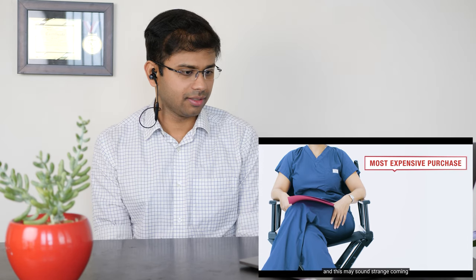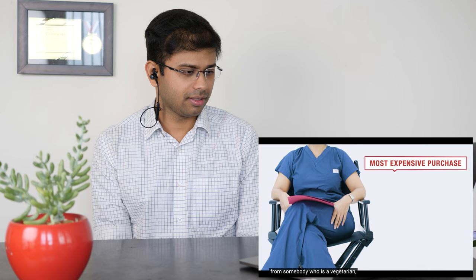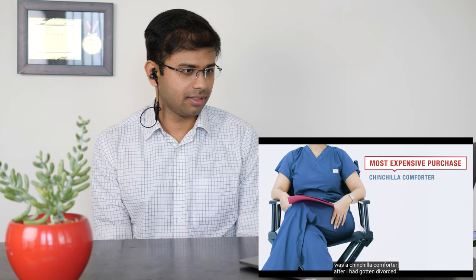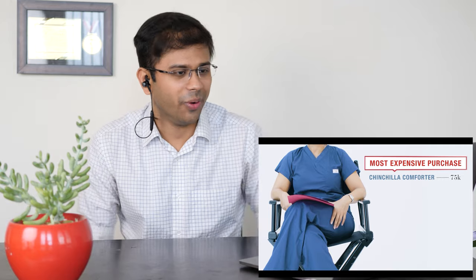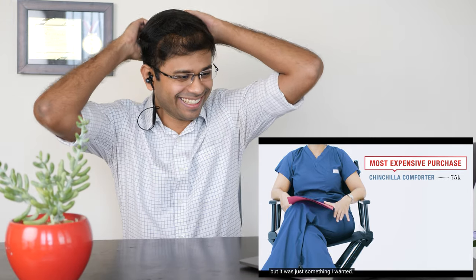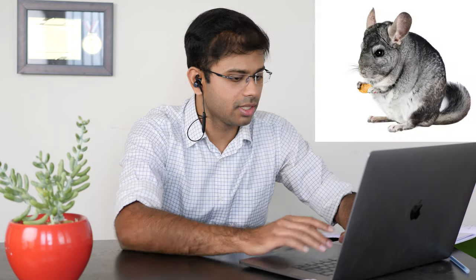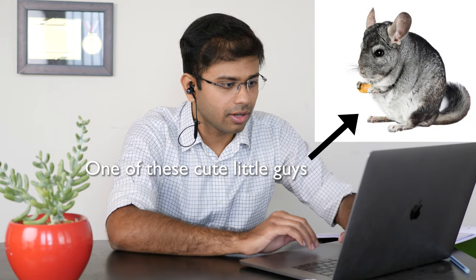The most expensive thing I ever bought, and this may sound strange coming from somebody who is a vegetarian, was a chinchilla comforter. After I had gotten divorced, it was probably about $75,000, but it was just something I wanted. Here's my, what the hell is a chinchilla comforter? Let me check. Okay, this is the thing. What is it made of? What's a chinchilla? Oh, it's a rodent. Oh, so it's $35,000.